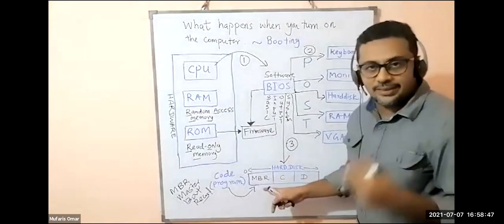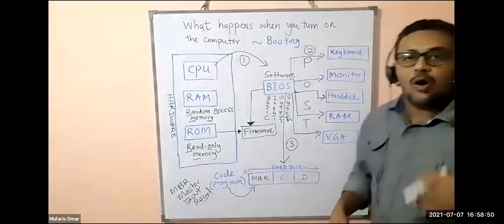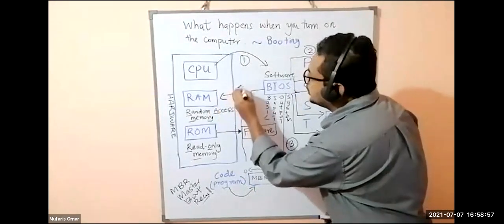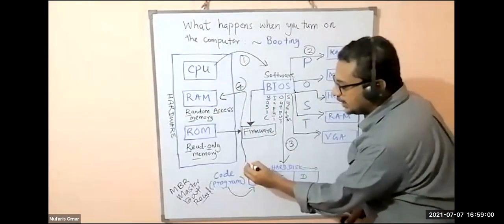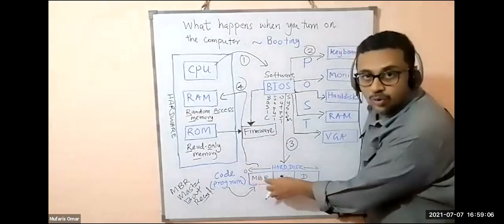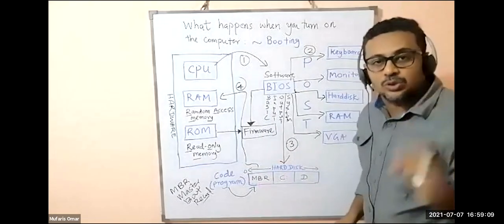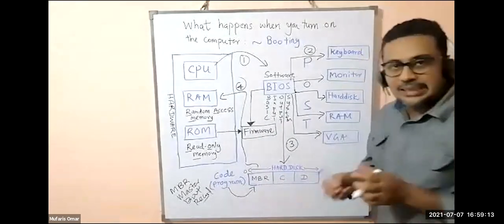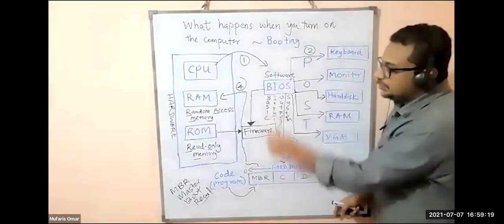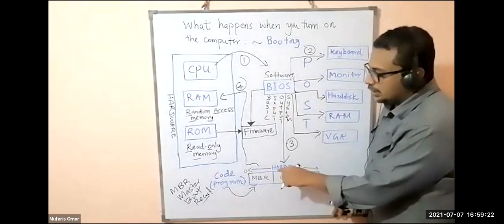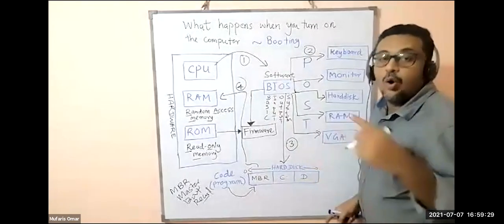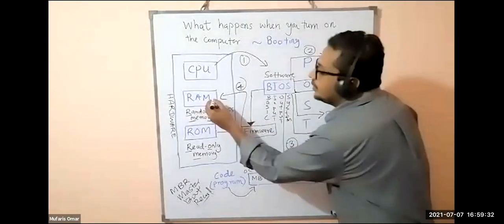This program will run and load the operating system into your memory. This is the fourth step. The MBR will execute the code. This MBR code knows where the operating system is installed. After POST check, BIOS invokes this program MBR, and this runs and loads the operating system into the RAM. That's the fourth part.